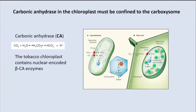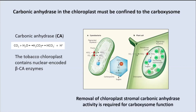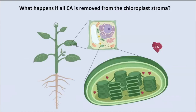One issue is that carbonic anhydrase in the chloroplast must be confined to the carboxysome. It's not confined right now because there is carbonic anhydrase naturally in the chloroplast of plants. It was shown that if you put carbonic anhydrase into the cytoplasm of cyanobacteria, that prevents the carboxysome from working, because the CO2 is then released in the cytoplasm instead of within the carboxysome. We would potentially have the same problem in the plant, so we need to remove the chloroplast stroma carbonic anhydrase.